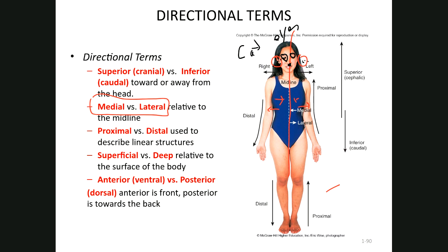So that's how we use the terms. The ears could be described as lateral to the eyes. If you were to describe the position of the ribs with regard to the navel — the umbilicus — you can say the ribs are superior and lateral to the navel.